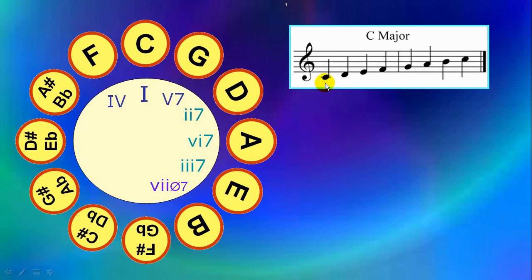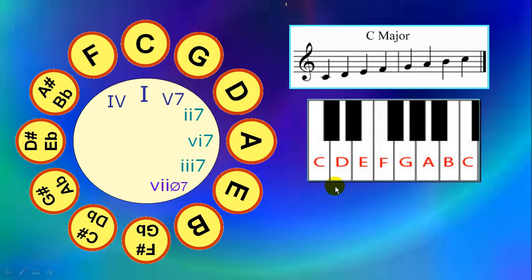If we count the scale tones, 1, 2, 3, 4, 5, 6, 7, and then this C is just a repeat of this C down here. We usually call this a major scale with 7 tones, or we call this a diatonic scale. And on the keyboard, we see this scale spanning an octave.